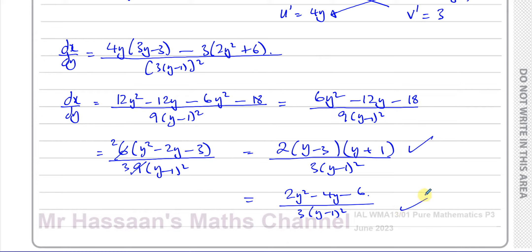Nothing cancels out, so this is the simplified answer. We could also leave it as 2y squared minus 4y minus 6 over 3 times (y minus 1) squared — both forms are fine. That's the answer to part a.